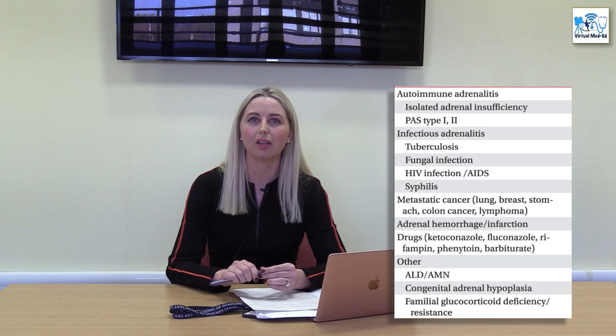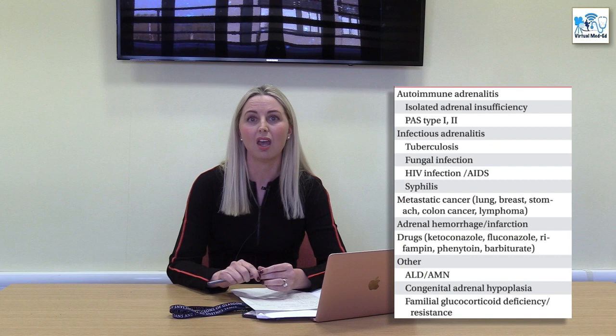Elsewhere in the world, infective causes — particularly TB — are much more common. Metastatic infiltration of the adrenal glands would be another rarer cause. Addison's disease is rare, with around 200 people newly diagnosed in the UK each year, but because of its hallmark features — particularly hyperpigmentation and salt craving — it fits really nicely into Station 5 alongside other endocrine disorders. Thyroid disorders are much commoner and also pop up frequently in Station 5.